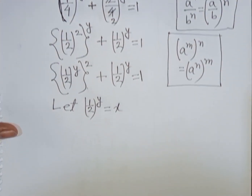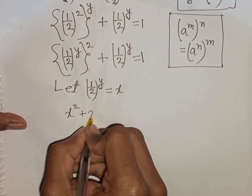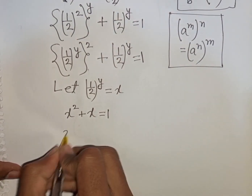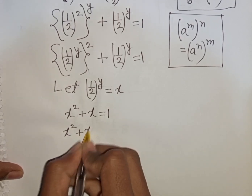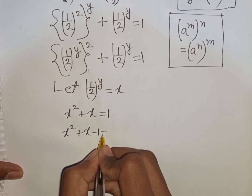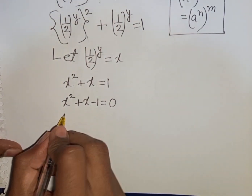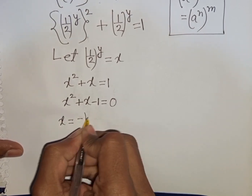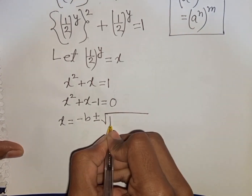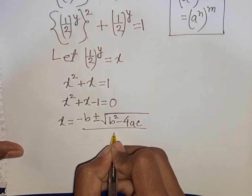So our equation becomes x squared plus x equals 1. Rearranging, x squared plus x minus 1 equals 0. Now we apply the quadratic formula: x equals negative b plus or minus square root of b squared minus 4ac, divided by 2a.